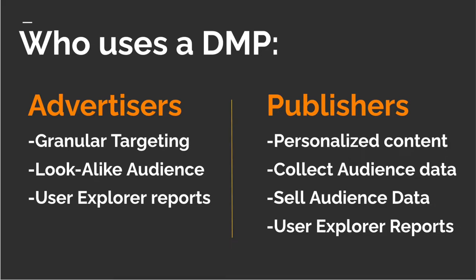In digital marketing, both advertisers and publishers can use a DMP. For advertisers, they use DMP to achieve granular targeting. For example, an advertiser can create a campaign targeting only people who are looking to buy an Audi or a Mercedes car. Similarly, if an advertiser has first-party data about people visiting their website and they want to find similar people, they can use a DMP to create lookalike audiences — essentially finding more people like the visitors of their website.